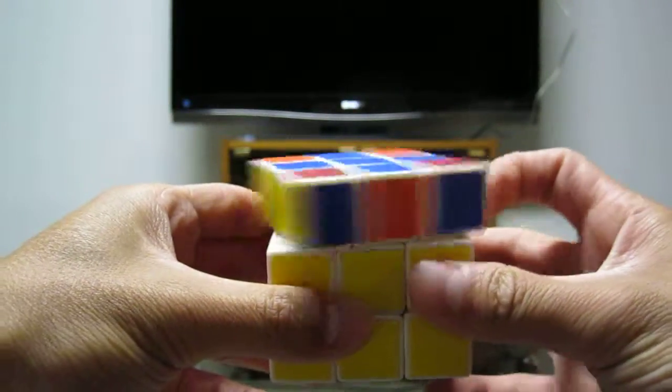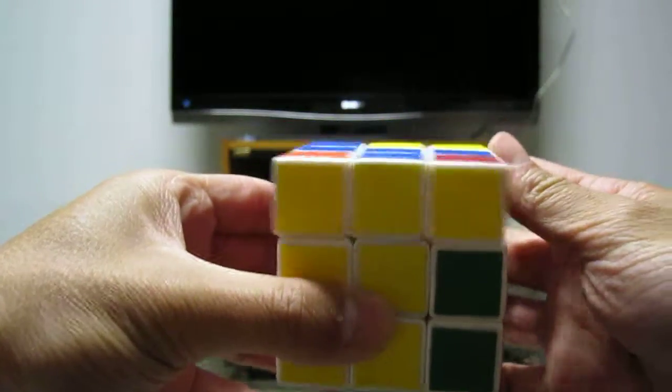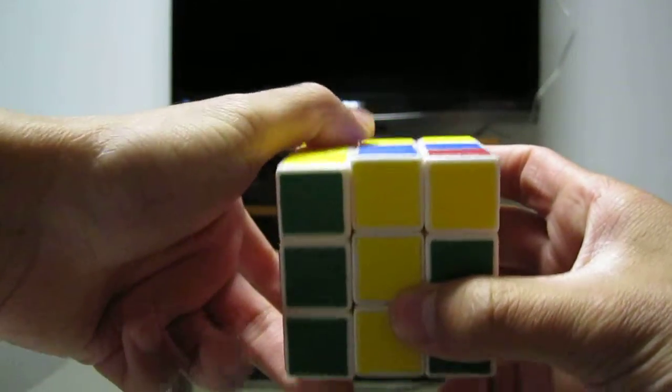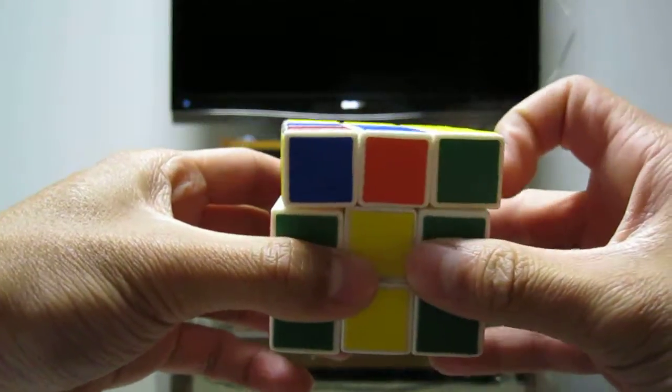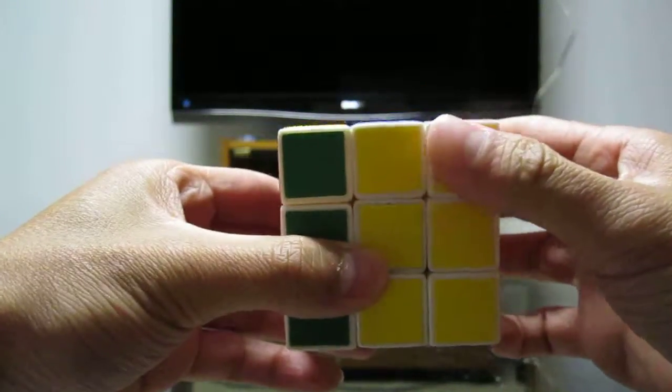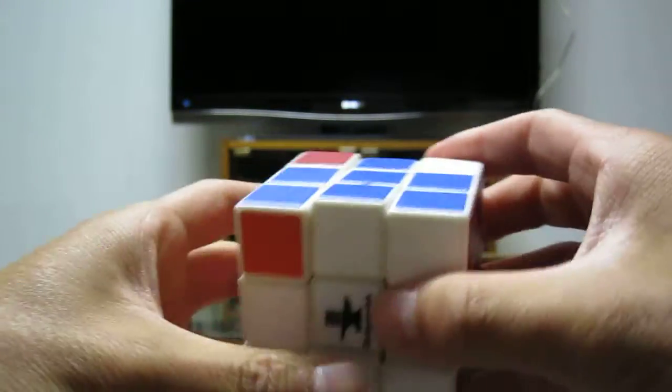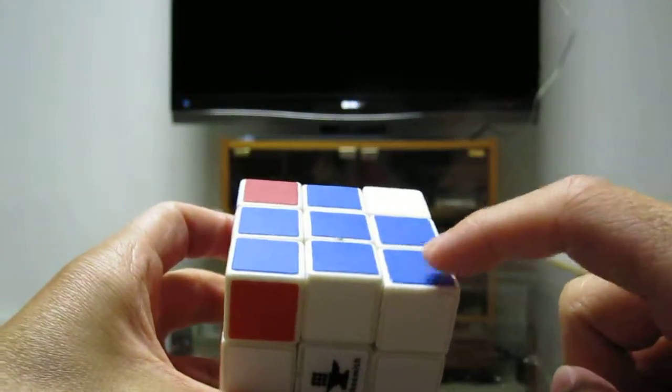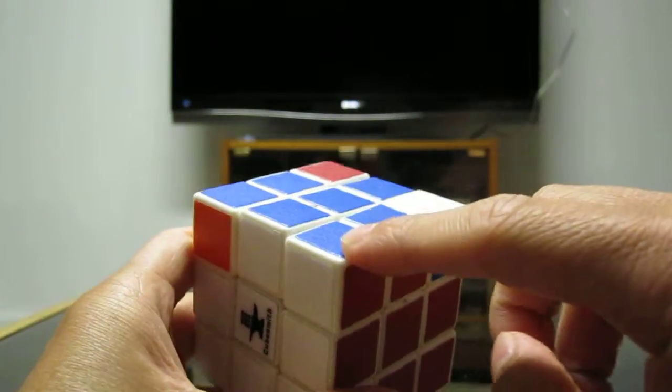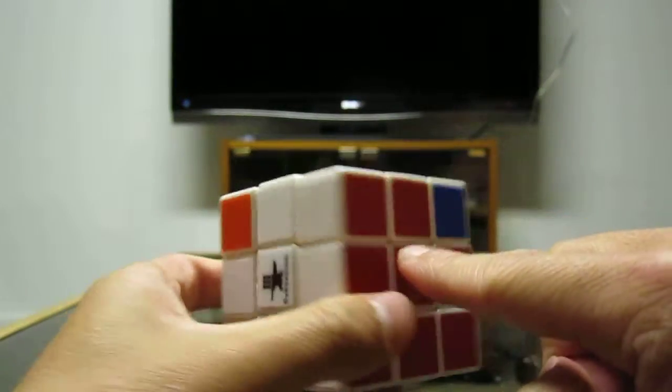It is U, R, U inverted, left inverted, U, R inverted, U inverted, left. And now, looking at the cube, this is now in the right spot, because blue, red, white, blue, red, white.